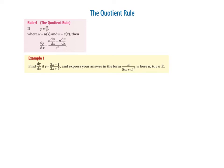It's pretty much what we did for the product rule — we're just sticking values into this formula instead of the previous one. So we've been asked to find dy/dx if y is equal to (3x minus 1) over (2x plus 5) and express it in the form of a fraction where a, b, and c are integer values. So we write down y equals (3x minus 1) over (2x plus 5).